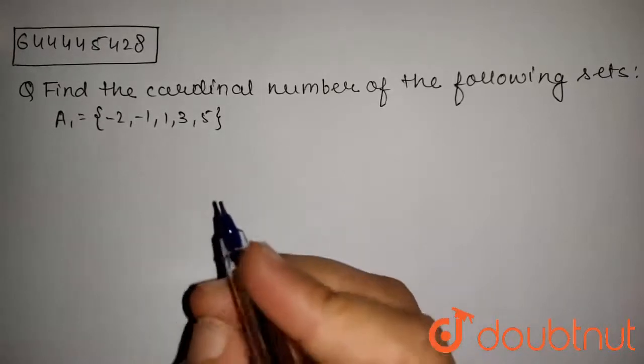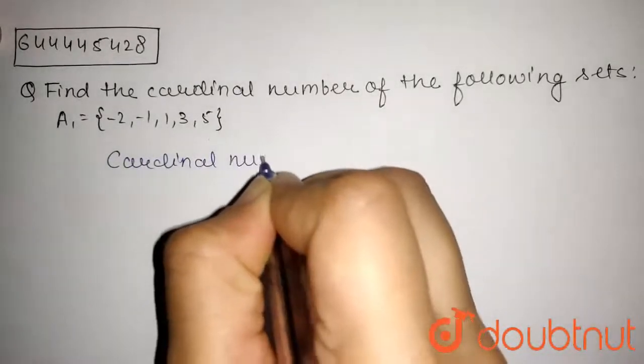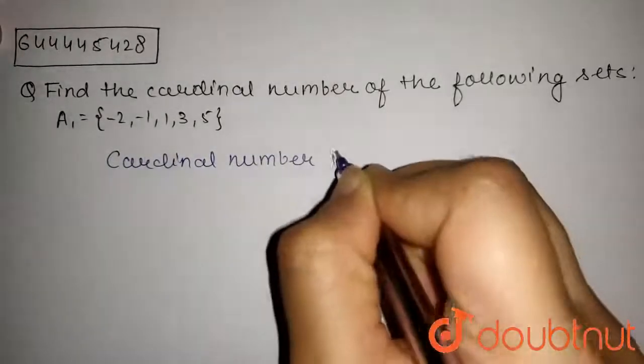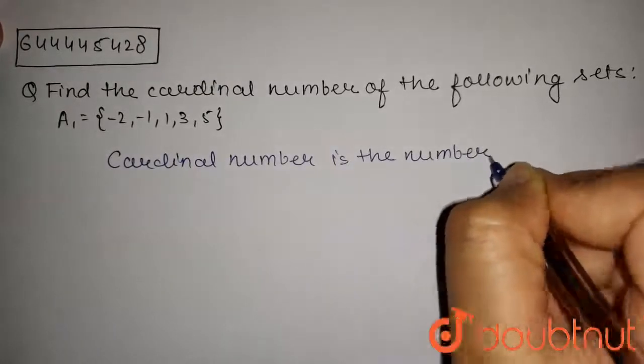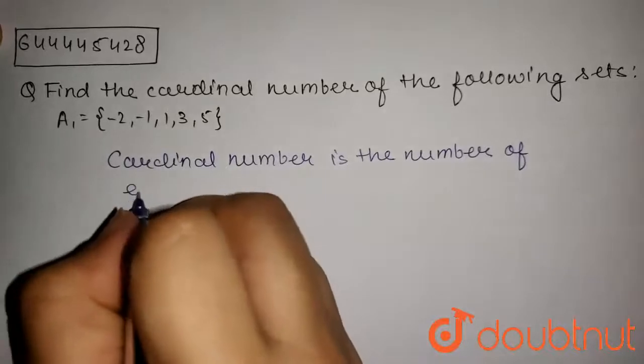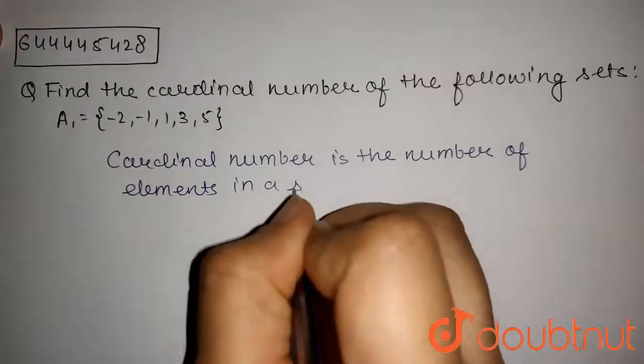So firstly, what is a cardinal number? A cardinal number is the number of elements in a set.